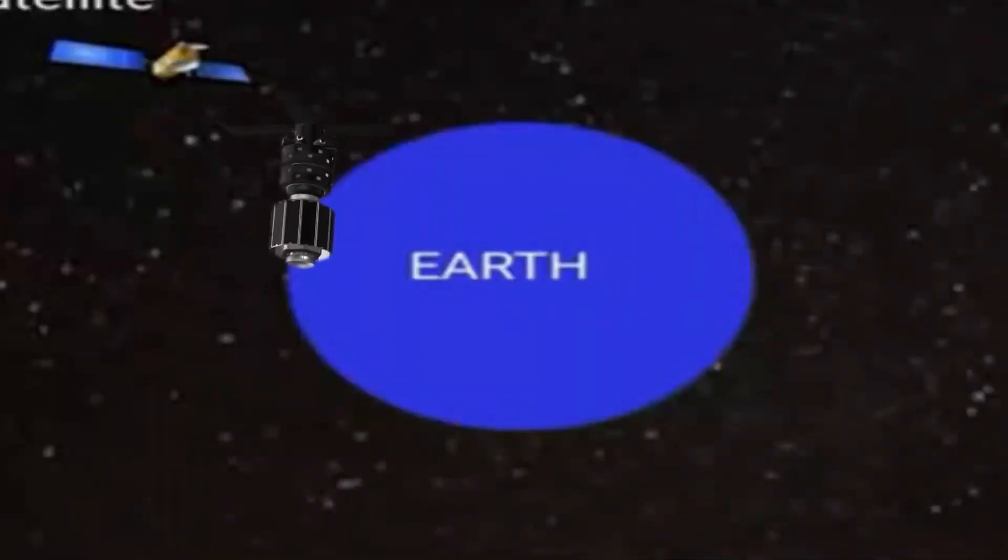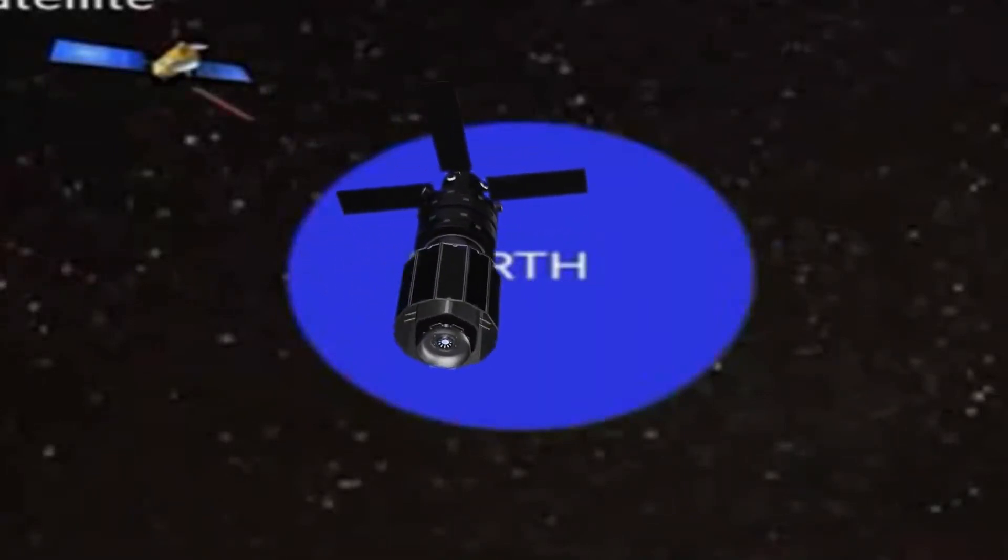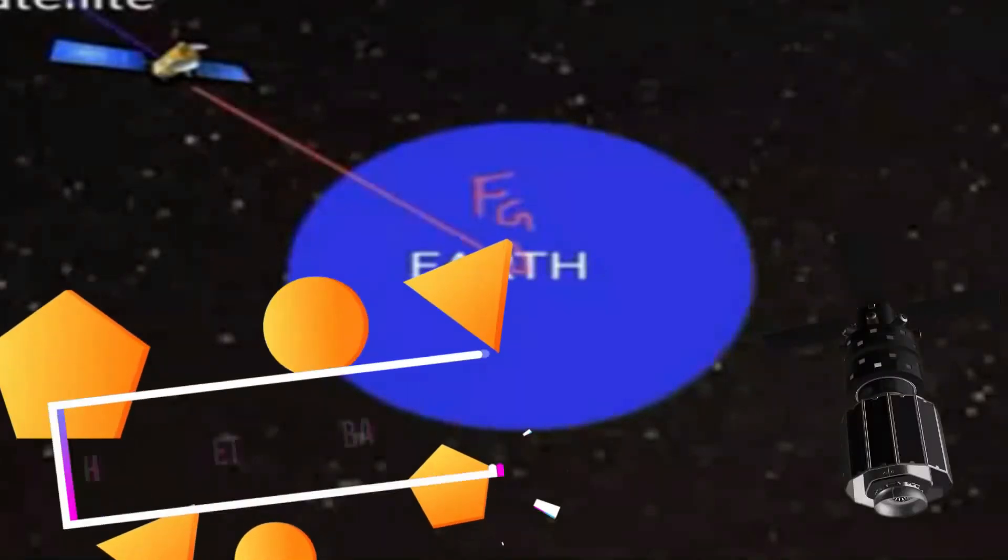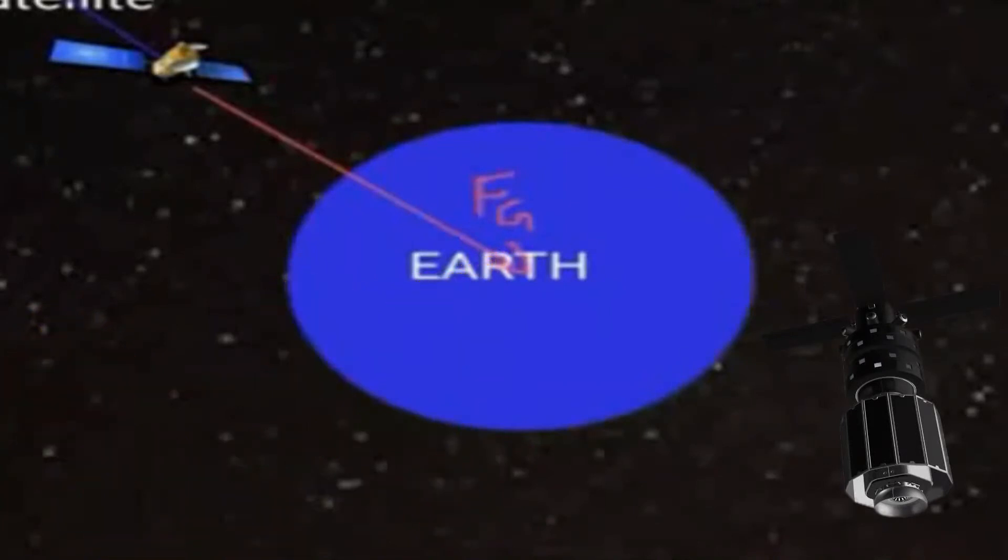Another type of satellites are GEO, which are about 36,000 kilometers above the Earth's surface, rotating around the Earth. A common question is: why